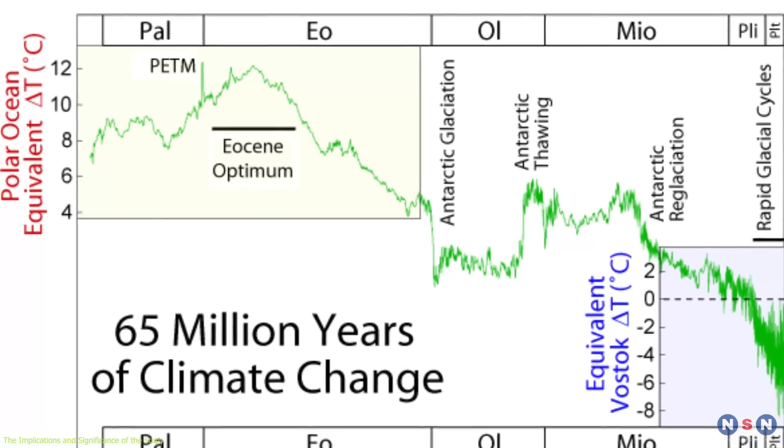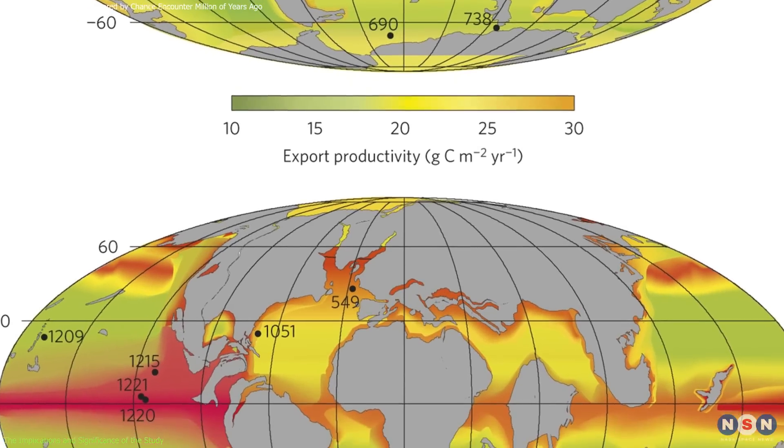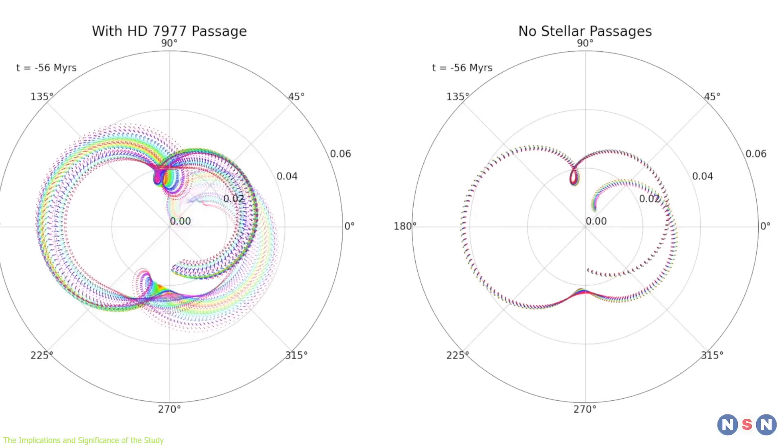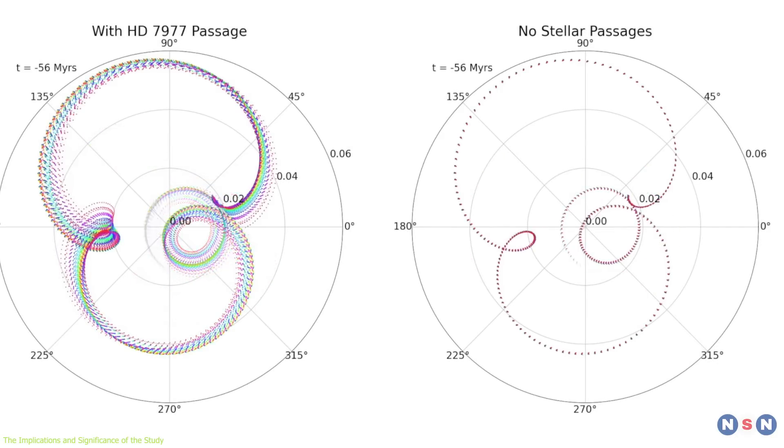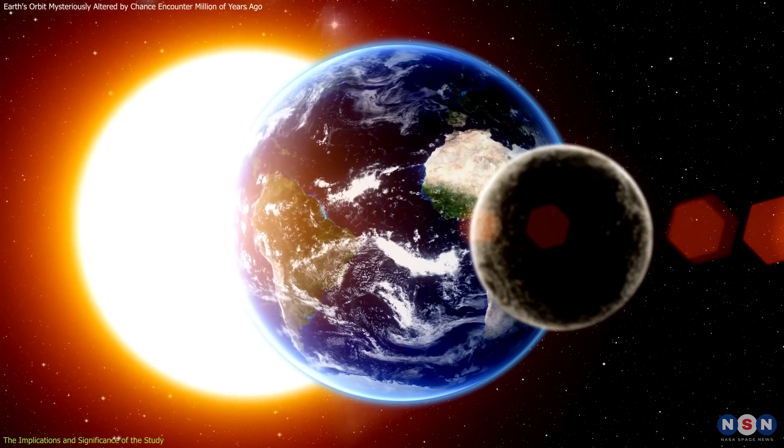It also means that we have a new potential explanation for the PETM, one of the most extreme and enigmatic episodes of global warming in Earth's history. By changing Earth's orbit, a passing star could have affected the amount of solar energy that Earth received and thus influenced its climate.